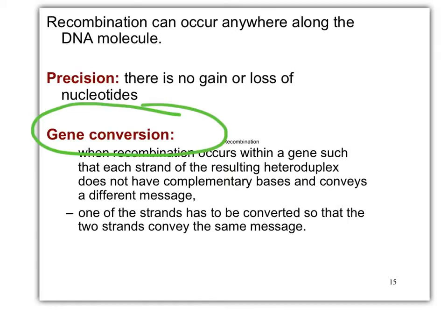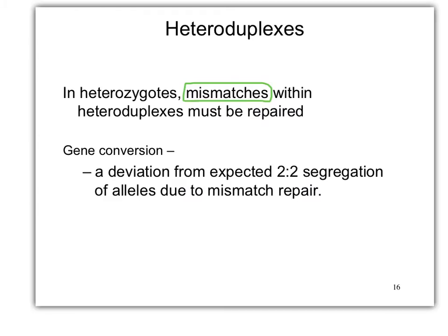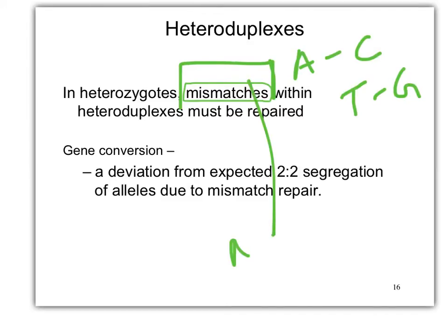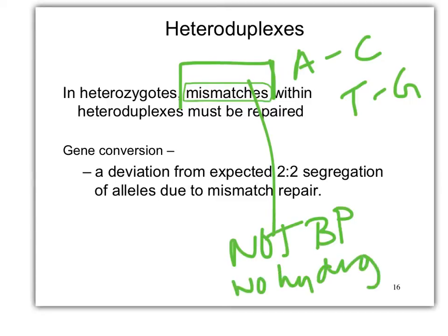Let's go through it. The mismatches — like A, C, T, G, whatever's not base paired — there's no hydrogen bond. If there's a gene conversion, that's when you can screw up this two-to-two segregation. We expect, after crossing over, if these were our original chromosomes and we have a crossing over event, we'd have peanut butter in our chocolate and chocolate in our peanut butter. This region here is still going to be heteroduplex.